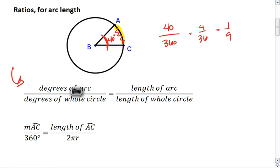A shorter way to write that is that the measure of arc AC over 360 equals the length of arc AC over 2πr, which is your circumference.